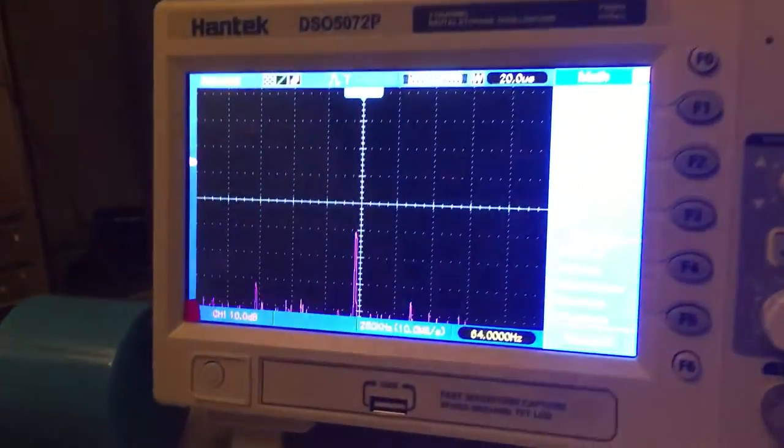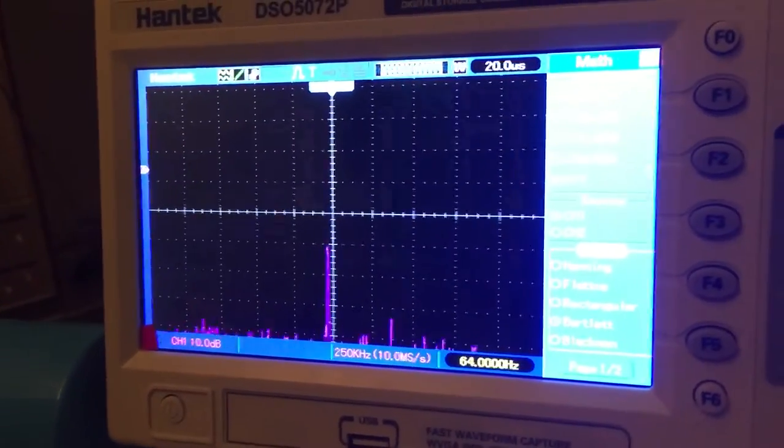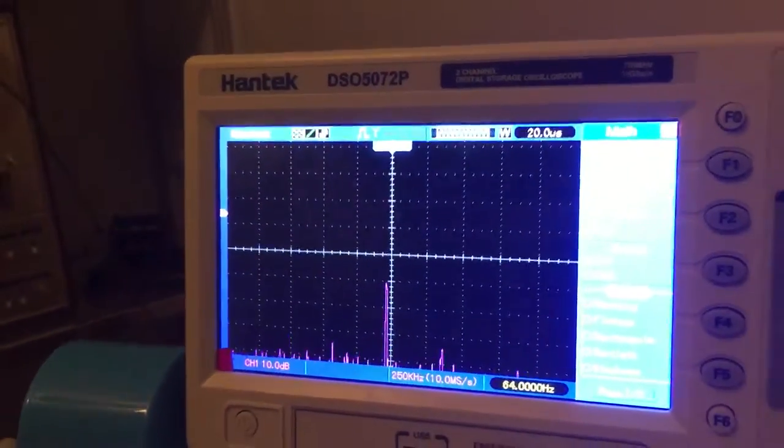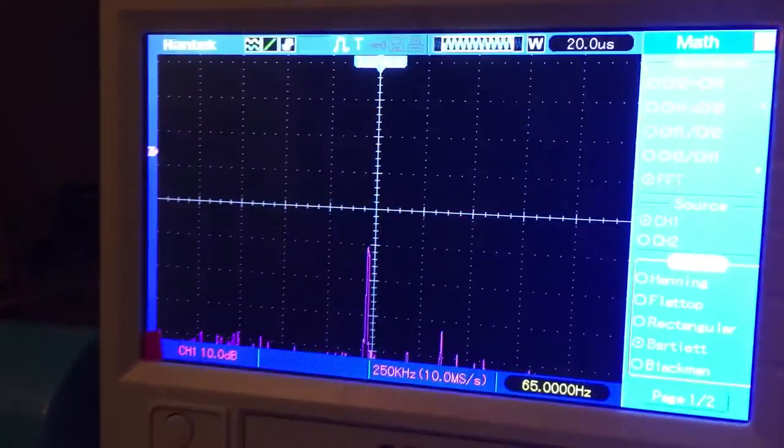When I look at the spectrum analyzer, what I'm seeing in the middle is my frequency right now. I have it on 4.03, just outside that range.